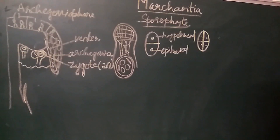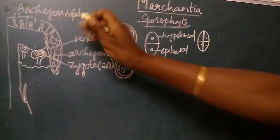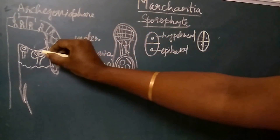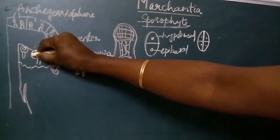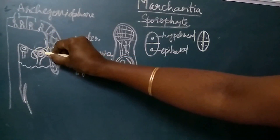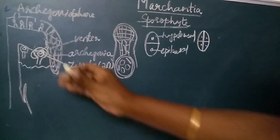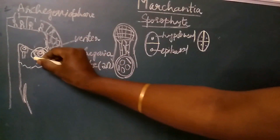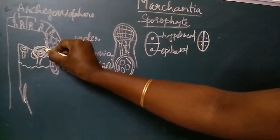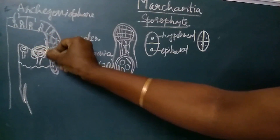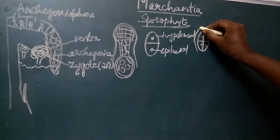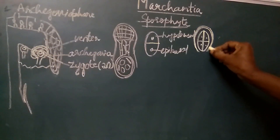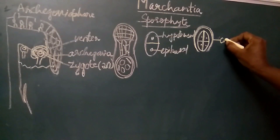Simultaneously, because of the stimulus created by fertilization, from the venter wall a sterile layer of cells starts developing around the archegonium, covering the young sporophyte. This sterile layer is two to three layered in nature and is called the calyptra.